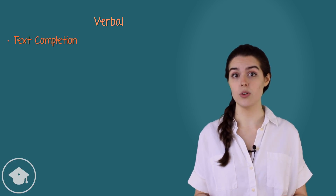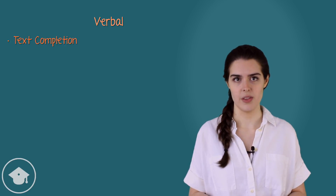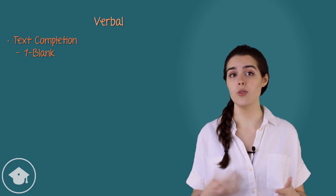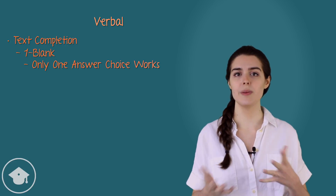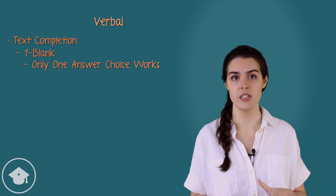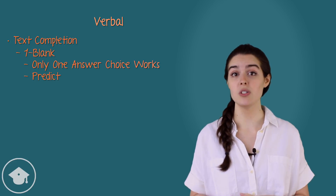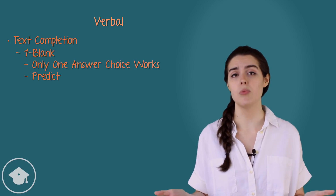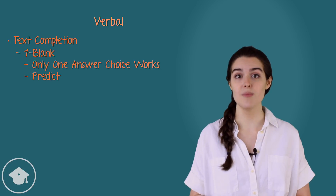The first category of question in the verbal section is text completion. Text completion questions require the test taker to complete sentences or sets of sentences by filling in words and phrases that make sense when plugged into the text. There are three flavors: the first is the one-blank text completion question, which has one blank and five answer choices. The best approach is to predict an answer in your own words before looking at the choices, then find the answer choice that most closely matches your prediction. This prevents wasting time on wrong answer choices. For more on sentence structure and vocab-based questions, check out our how-to-master GRE vocab video.